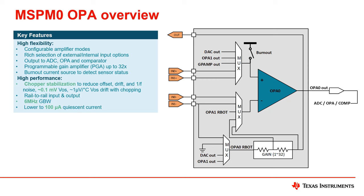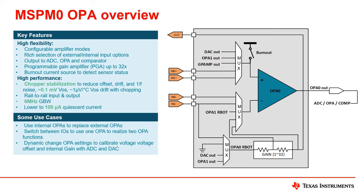Here are a few simple examples based on the flexibility of the OPA. Because the overall noise level of the OPA is low, the user can replace the external OPA in some scenarios. The user can switch between N0 and N1 to match different operational amplifier configurations, allowing you to multiplex the operational amplifiers in real-time, enabling the functionality of two OPAs and reducing the overall cost. Users can also use the internal DAC and ADC to dynamically calibrate the offset voltage and gain of the OPA, which helps improve its performance over different temperatures.